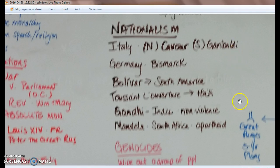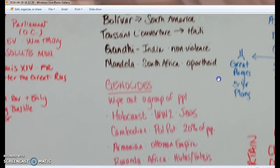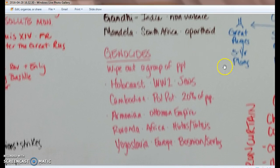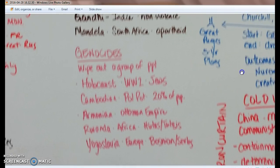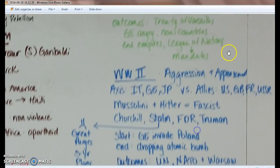Genocides — remember it's when you're trying to wipe out a group of people. The Holocaust in World War II: wiping out the Jews. Cambodia: Pol Pot kills 20% of the population, targeting Buddhist monks, intellectuals, and anyone challenging him. The Armenian Genocide happens in the Ottoman Empire during World War I. The Rwandan Genocide between the Hutus and the Tutsis in Africa in the 1990s. Also in the 1990s: Yugoslavia in Europe, the Bosnians and the Serbs — look at the map in your packet.